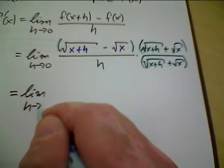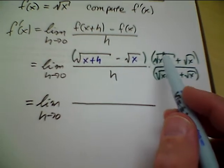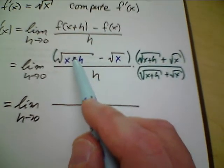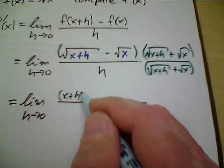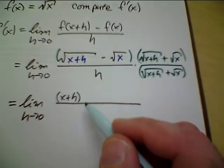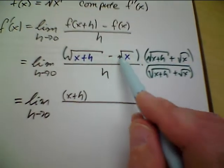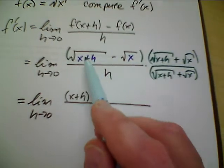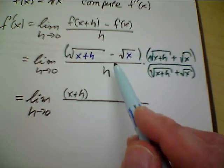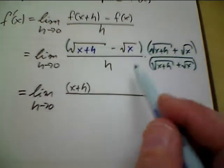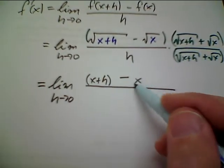So, we have the limit as h goes to 0. And then the top, if I foil this, that will be that squared. So, the square root of x plus h squared, but that's just x plus h. The middle terms will cancel because you get a minus root x root x plus h and a plus root x root x plus h. So, they're going to cancel with each other. So, I'm left with a minus times a plus is a minus, and root x times root x is just simply x.